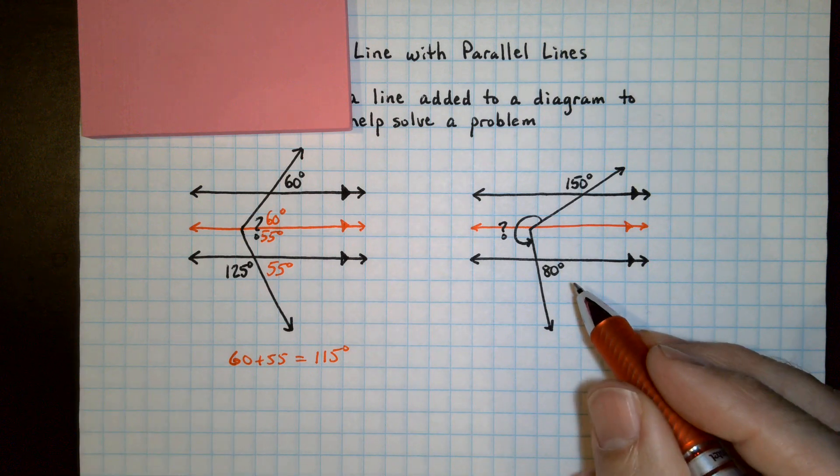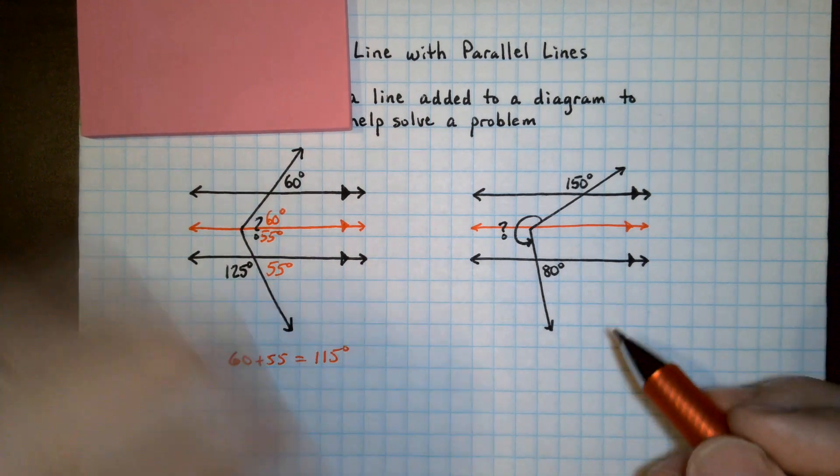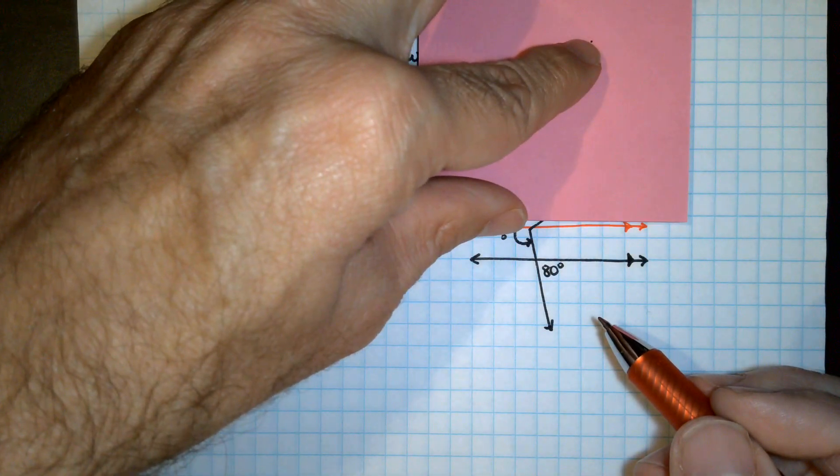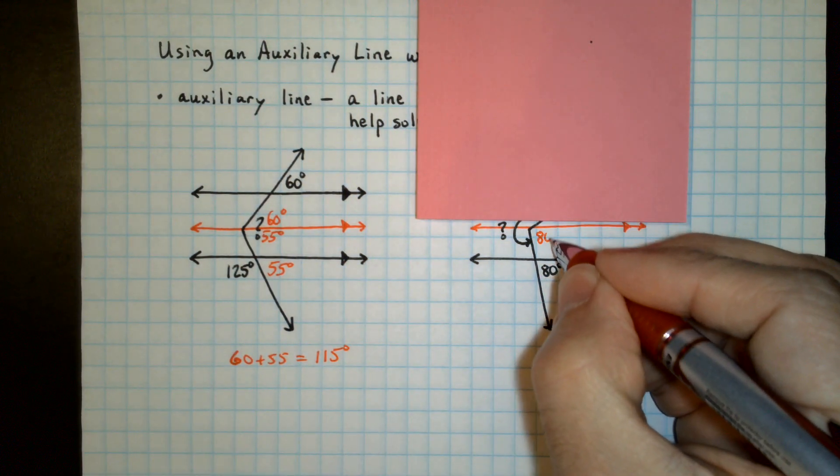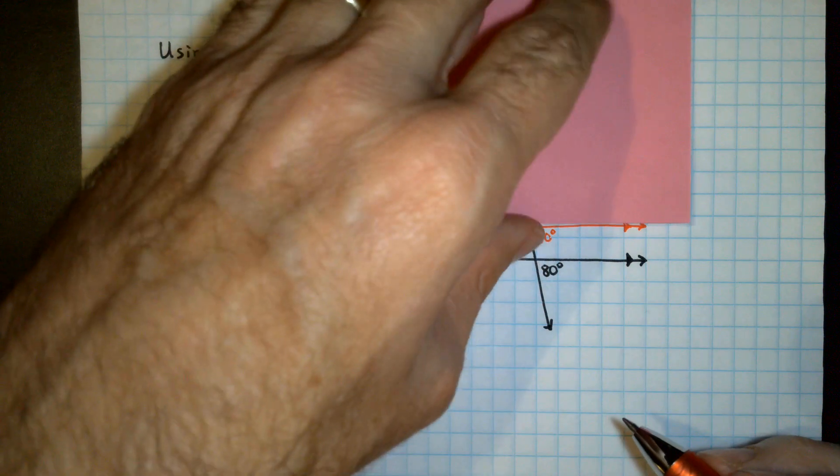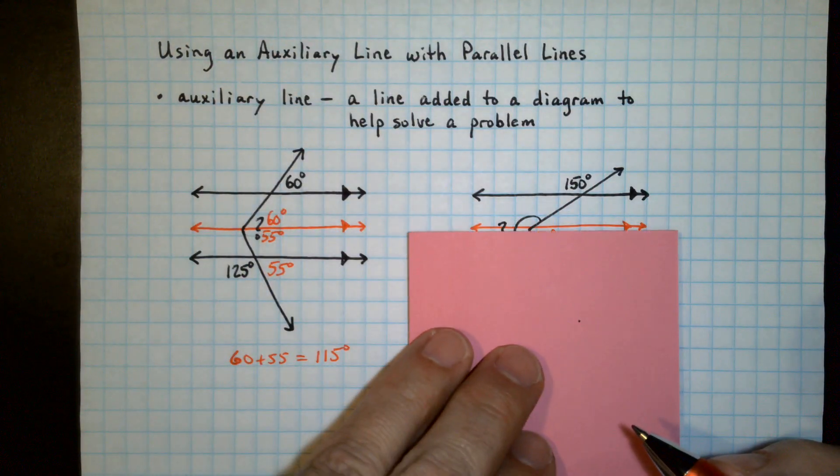Well in a similar way over here we can cover up part of the diagram. This 80 corresponds to this angle. So it's 80 and cover up another part,